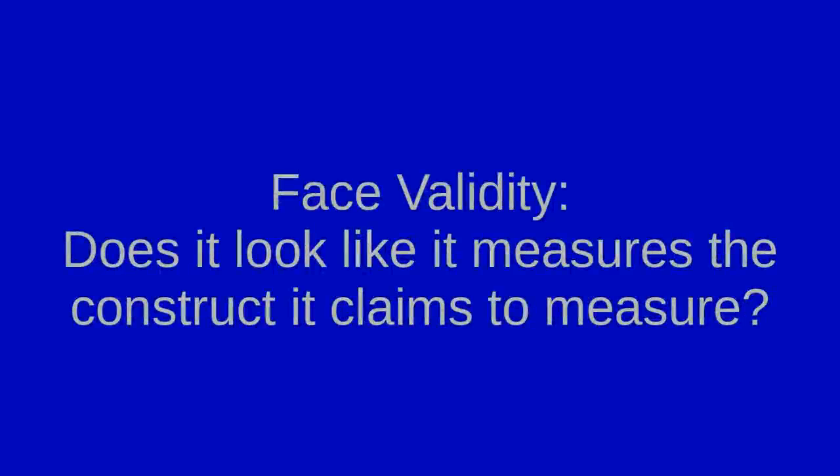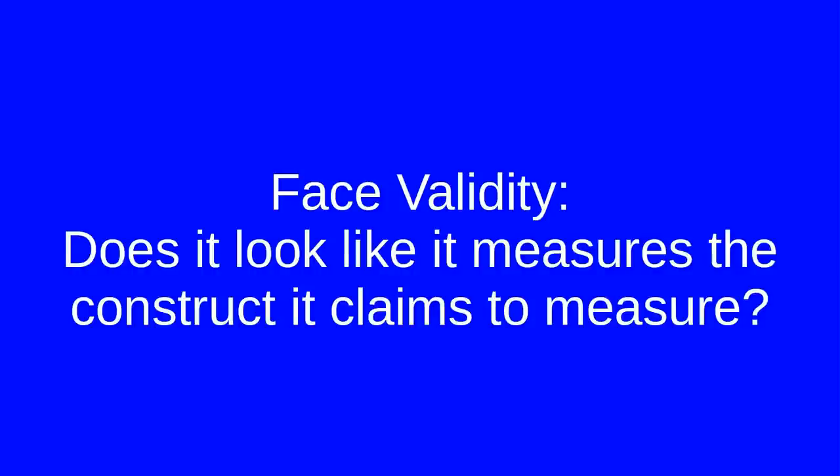This type of validity includes what is commonly called face validity. Face validity just means that if you were to read through an instrument, you would think that it was measuring what it was attempting to measure. For example, say I'm developing an instrument to help me diagnose generalized anxiety disorder using criteria from the DSM-5. If you read through my instrument, you'd probably expect to find questions that ask about worry and anxiety. If you were reading through it and you found questions asking about whether or not someone is an introvert or an extrovert and didn't really find any questions about anxiety, you would probably conclude that my instrument has low face validity.